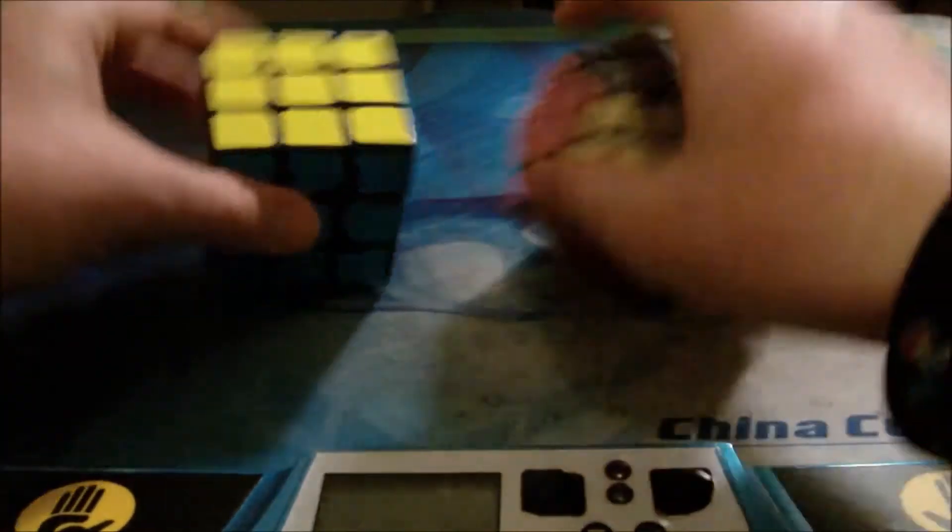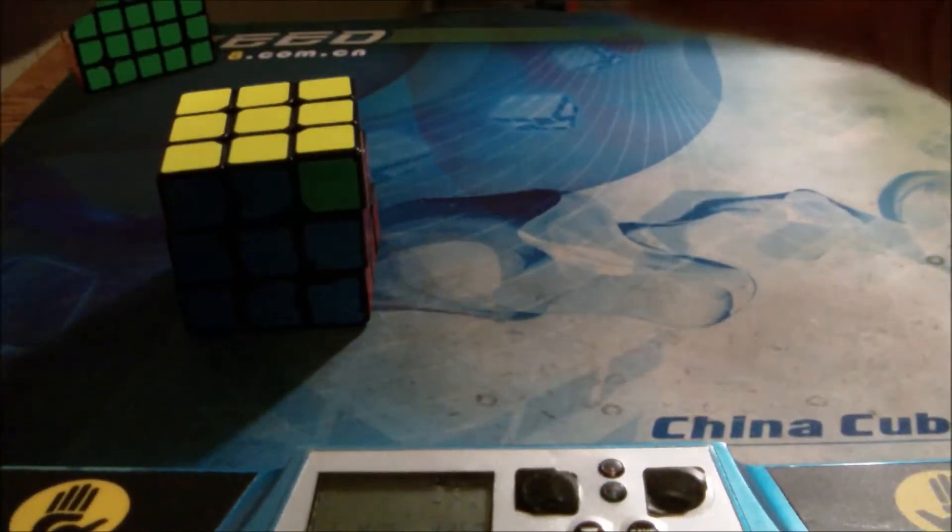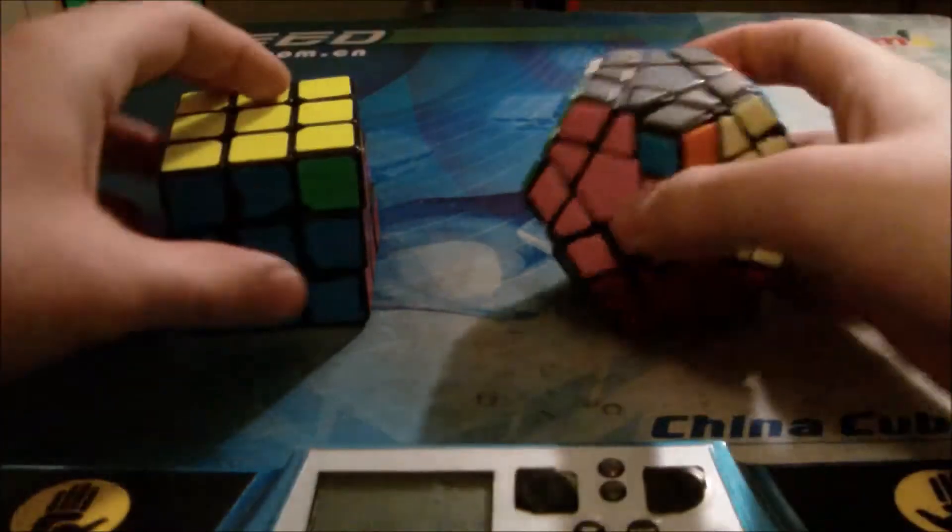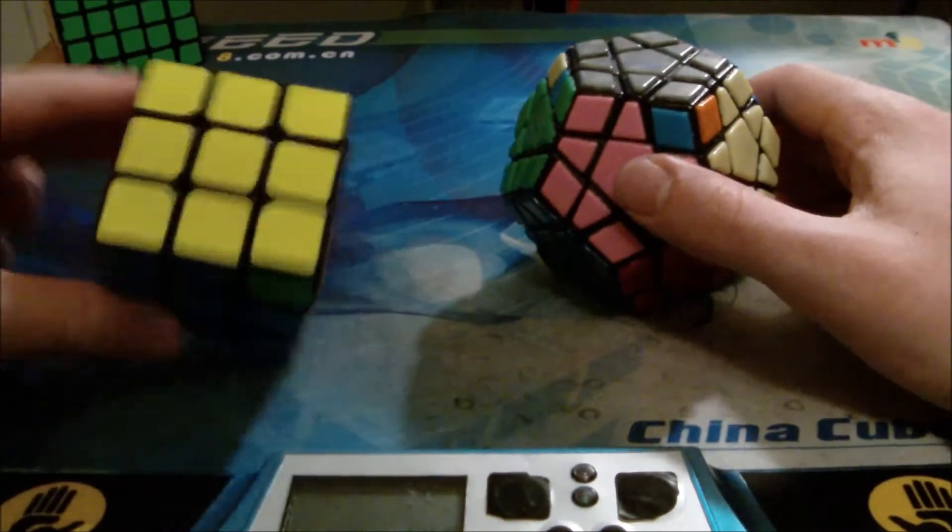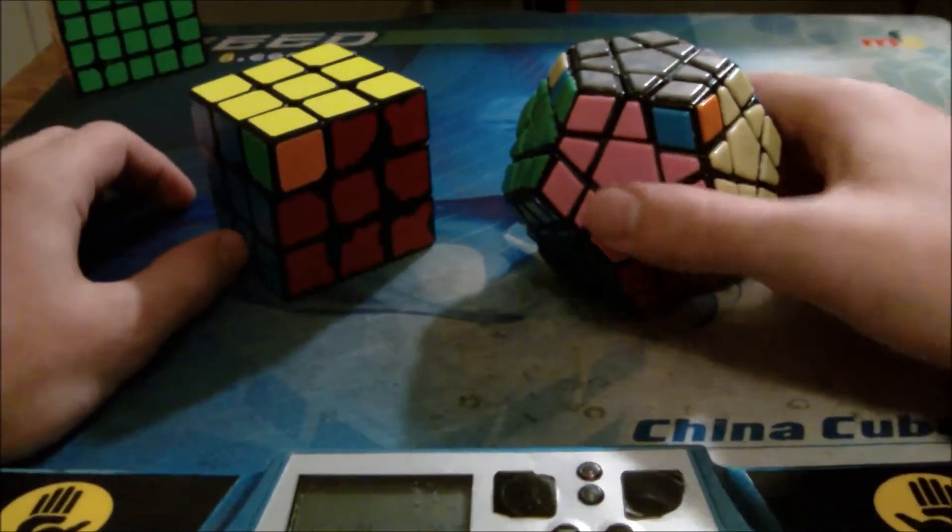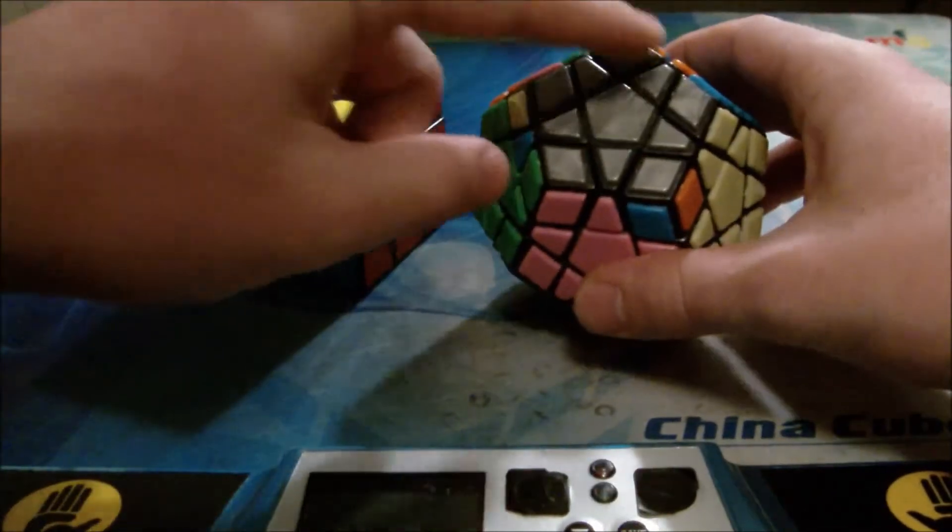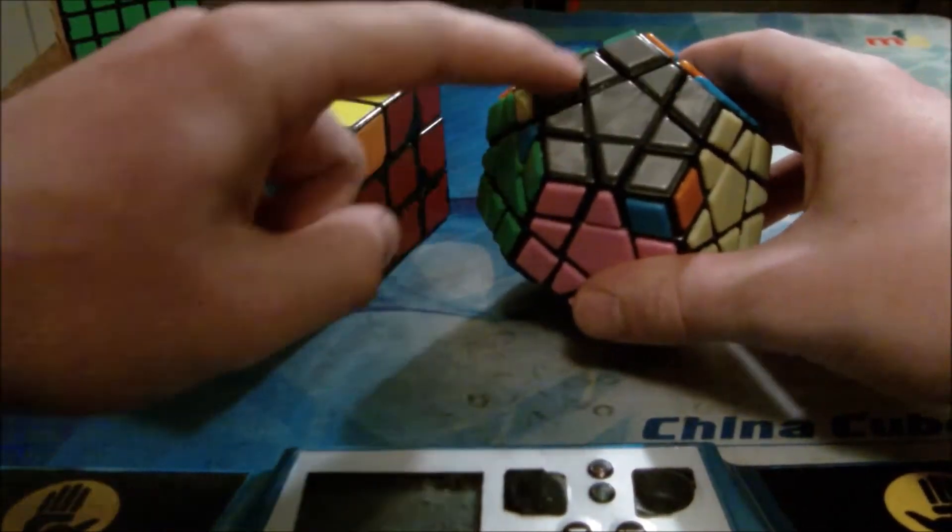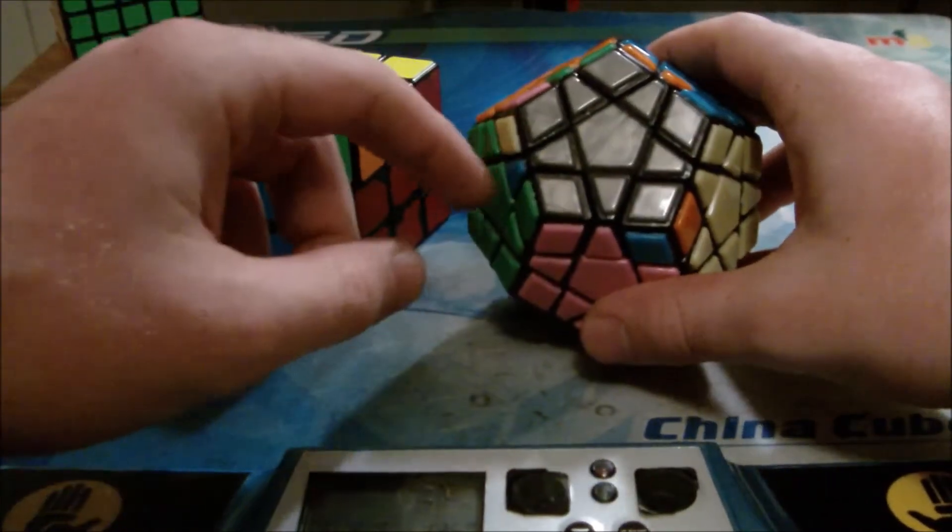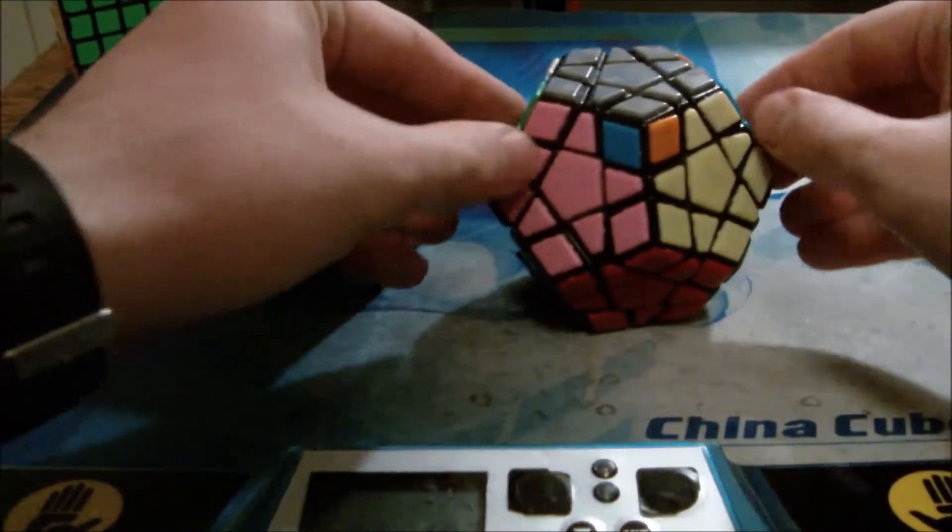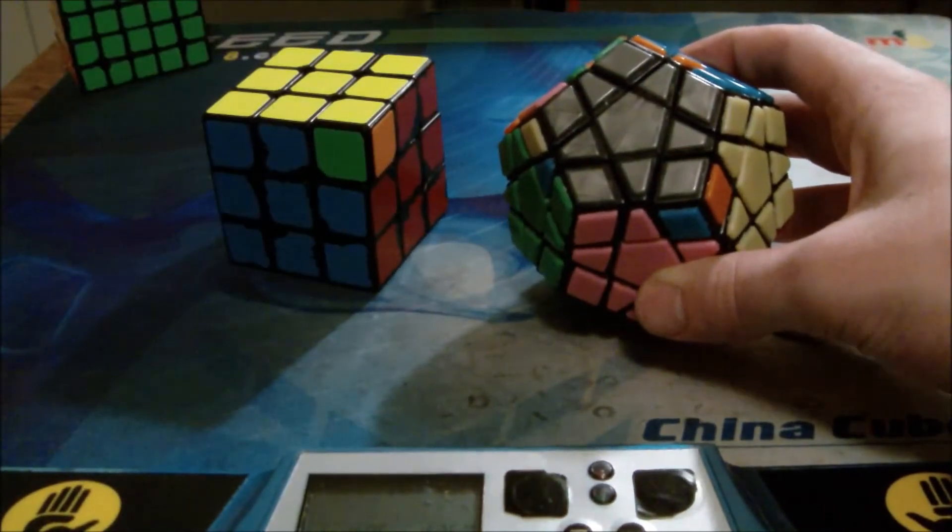Next is Y-perm. So for Y-perm, this is what it looks like on a 3x3. On Megaminx, it's very similar. It's just, instead of all of these being unsolved, there's a block back here that doesn't match up. As long as you match these two up, it won't match up with any of the edges or corners back there.